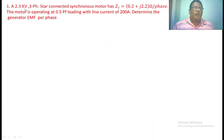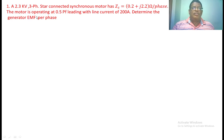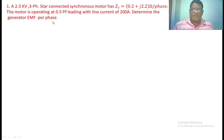A 2.3 kilovolt three-phase star-connected synchronous motor has a synchronous impedance of 0.2 plus j2.2 ohms per phase. The motor is operating at 0.5 power factor leading with a line current of 200 amperes. Determine the generated EMF per phase.